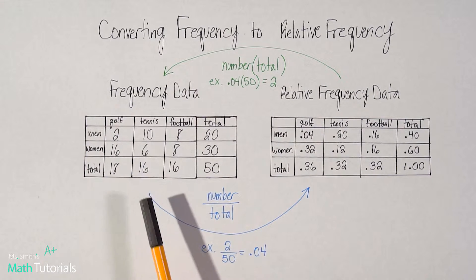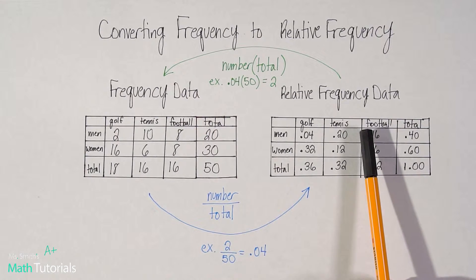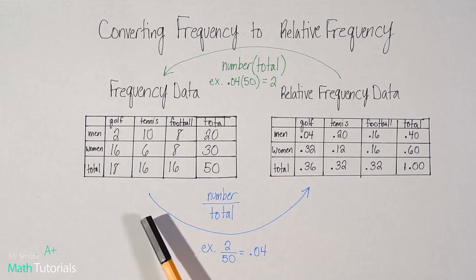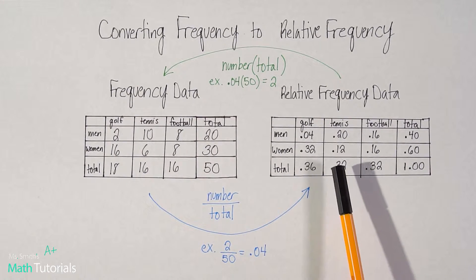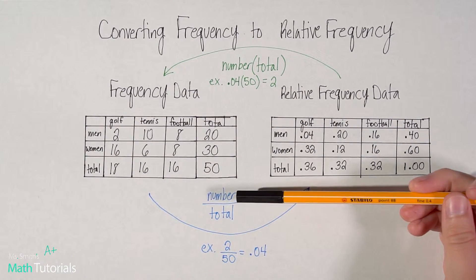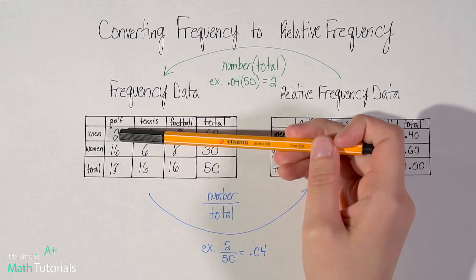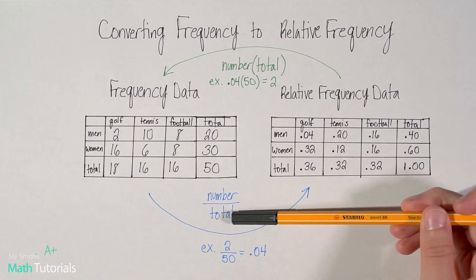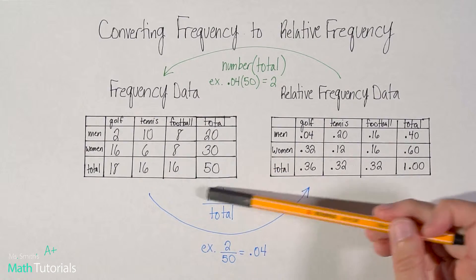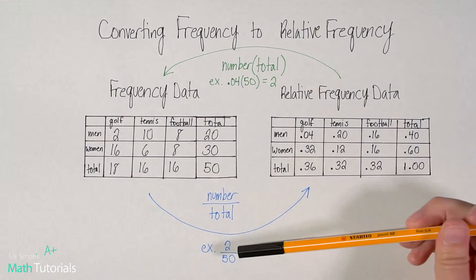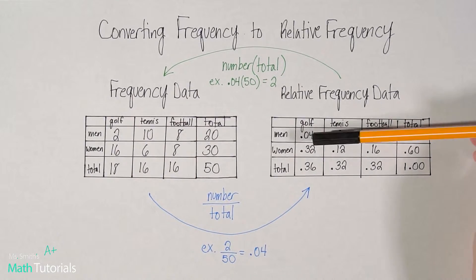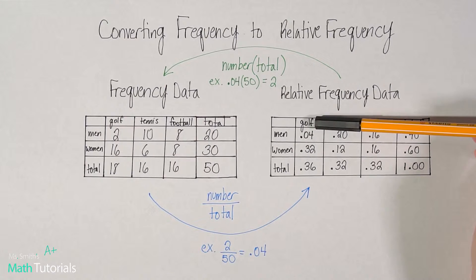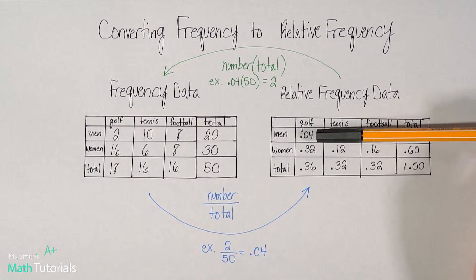Now to change from frequency data over to relative frequency data — which is this blue line right here — all we need to do is divide the frequency number by the total number of participants. So for example, 2 divided by 50 gives us the relative frequency for men who like golf: 0.04.